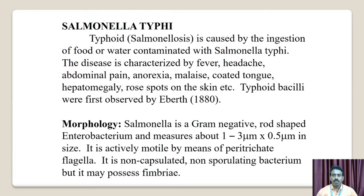Typhoid Salmonellosis is caused by the ingestion of food or water contaminated with Salmonella Typhi. The disease is characterized by fever, headache, abdominal pain, anorexia, malaise, coated tongue, hepatosplenomegaly, rose spots on the skin, and etc. The Typhoid bacilli were first observed by Eberth in 1880.